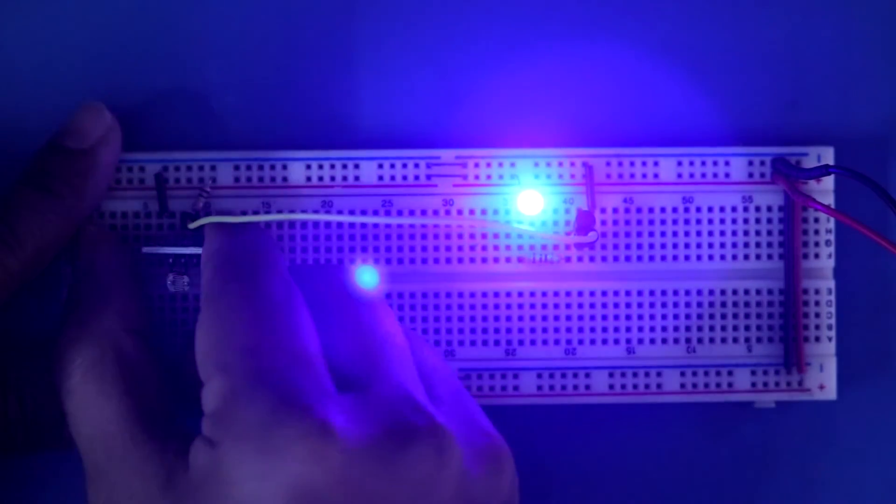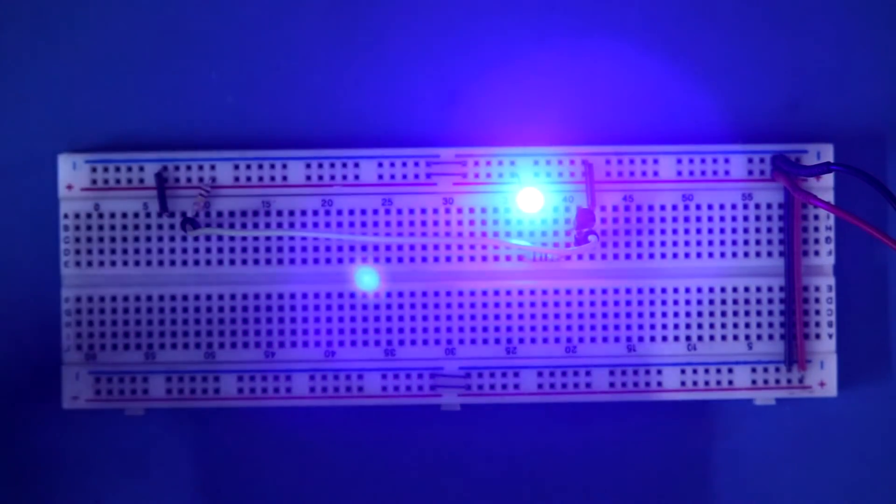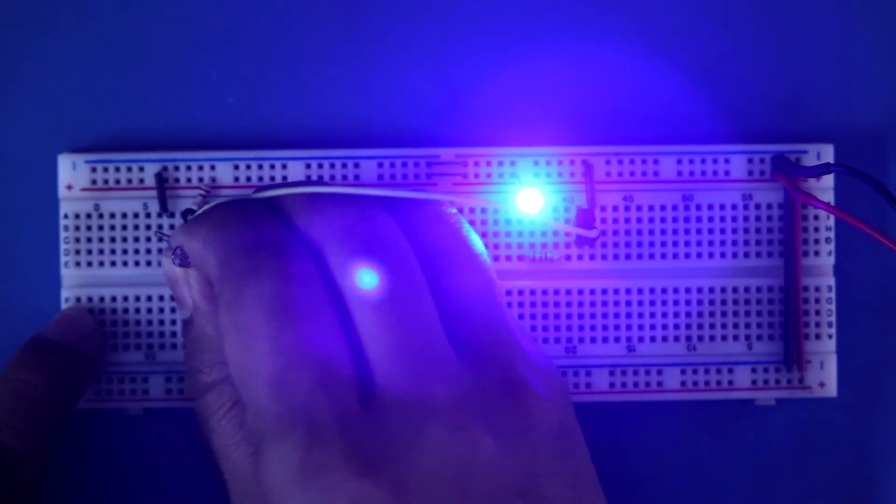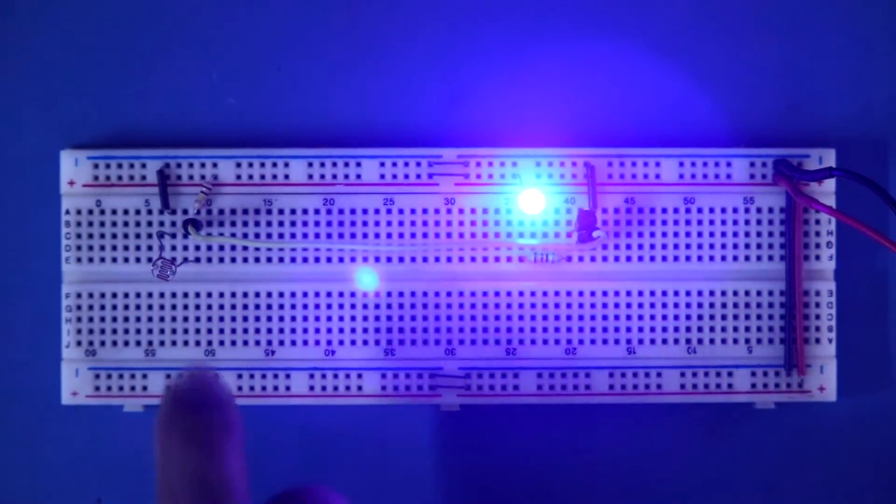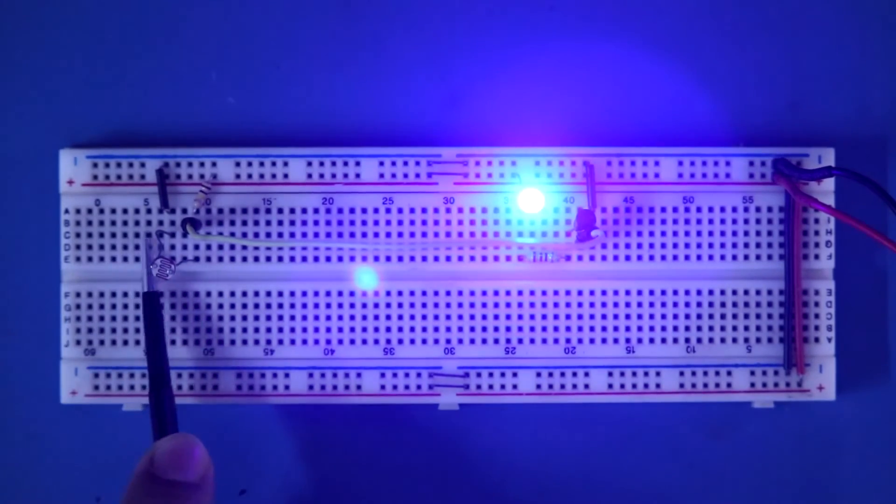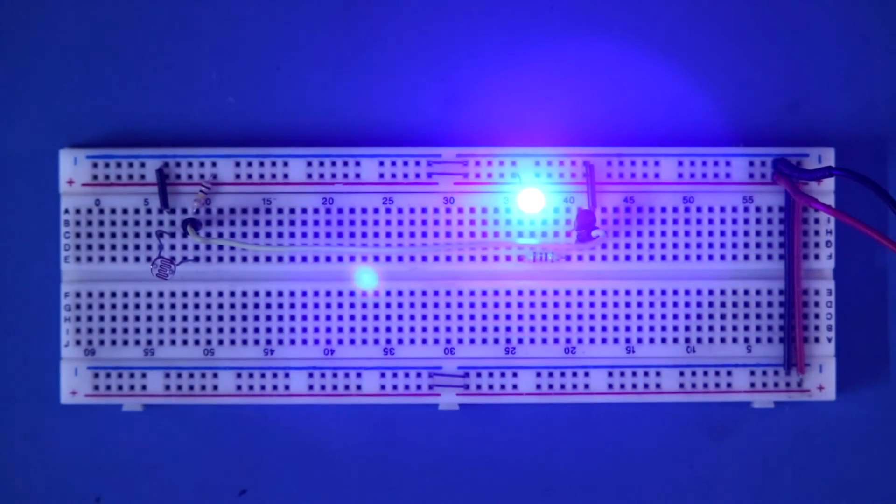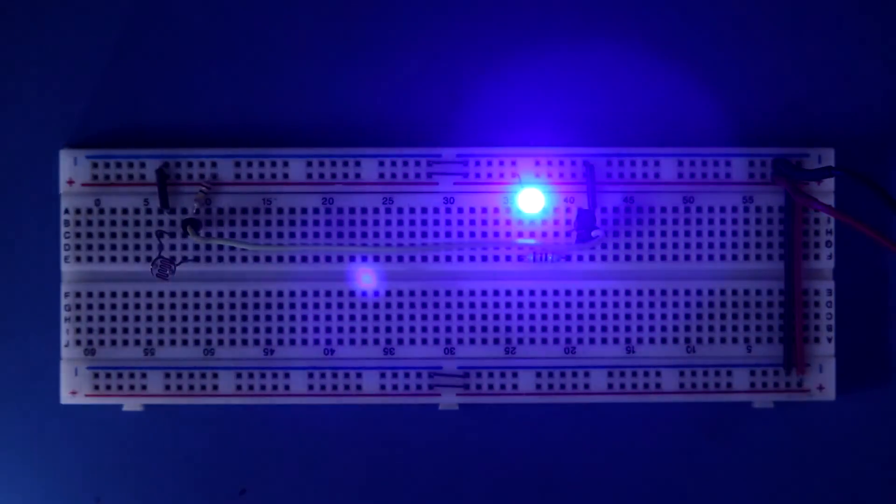Now we will check whether this LDR will work or not. One pin is connected to the 100 kilo ohms and another is connected to the ground pin. See, this is working.